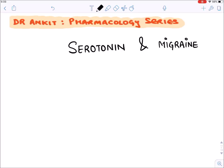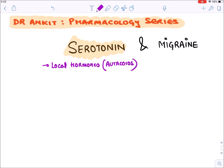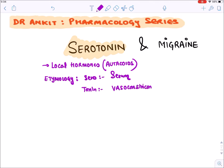Hello all. Let's discuss an autocoid known as serotonin, and with serotonin we will also discuss the treatment of migraine. Serotonin is a type of local hormone - it is synthesized by the cell and acts locally in the adjacent cell. These are also known as autocoids, meaning self-acting. The word 'sero' comes from serum (it was first identified in human serum or plasma) and 'tonin' means it increases the tone of blood vessels because it produces vasoconstriction.